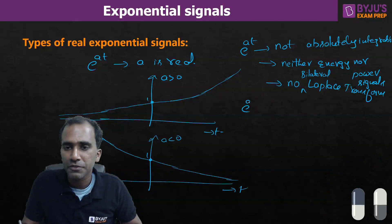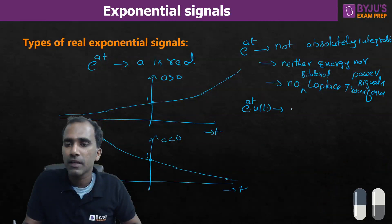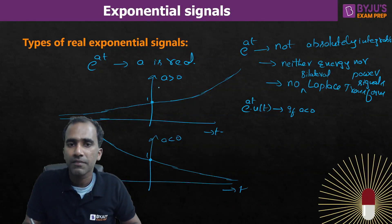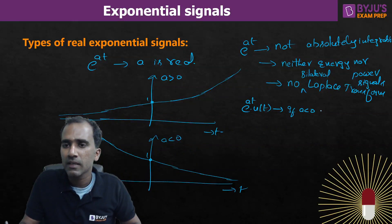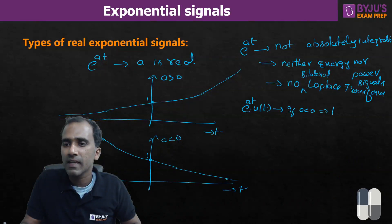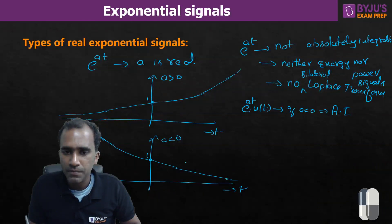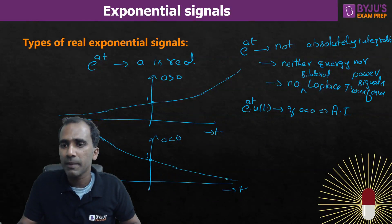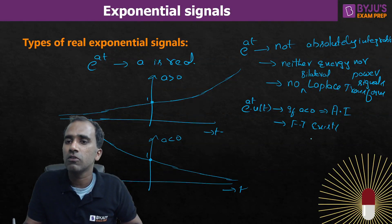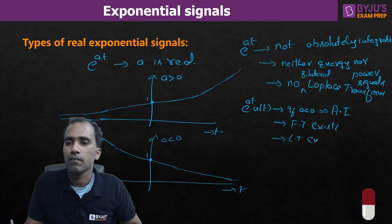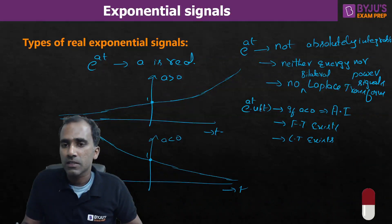However, e^(at)·u(t) — the signal multiplied by the unit step function — is only the positive-time portion. If 'a' is negative, this part has finite area and is absolutely integrable. Hence, the Fourier transform exists, and Laplace transform also exists. So with the multiplication by u(t), both bilateral and unilateral Laplace transforms will exist. In mathematics, what we learn is the unilateral Laplace transform, where only positive-time values are considered.